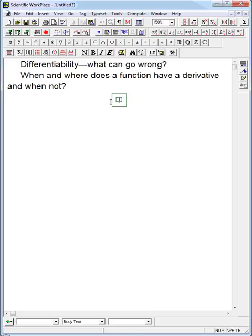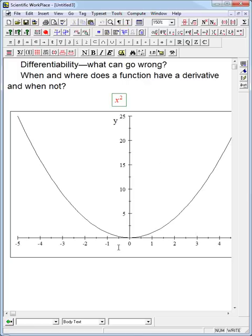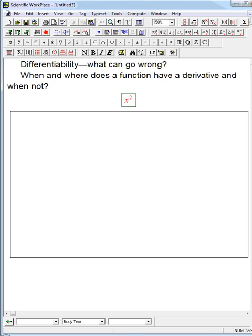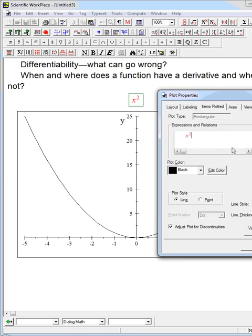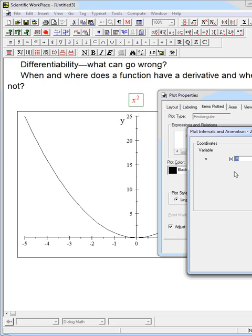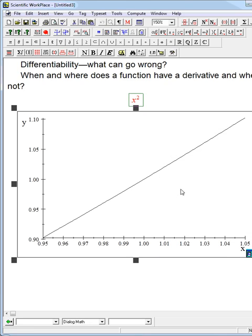We've seen that if we graph a function like x squared, just a perfectly nice function, it looks like a nice smooth curve. When we zoom in on that thing, let's look at this really near 1, from 0.95 to 1.05, we zoom in on it and it looks like a straight line.